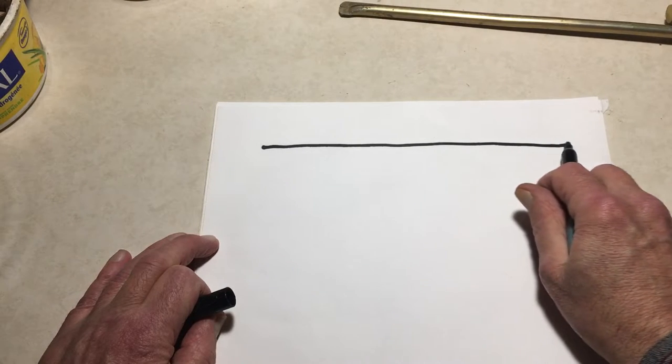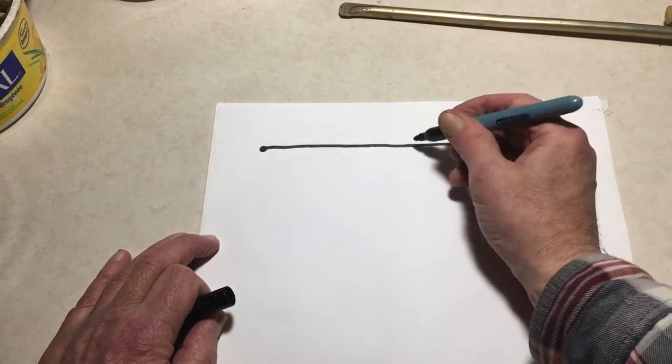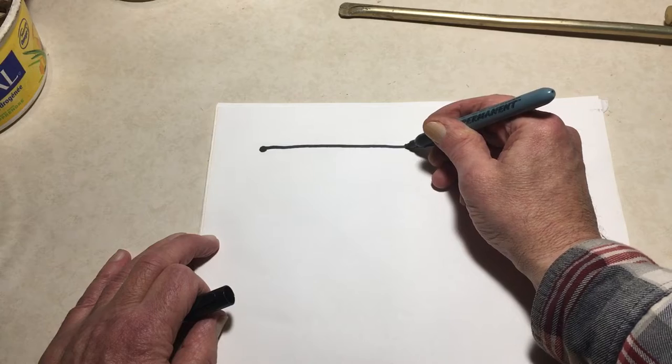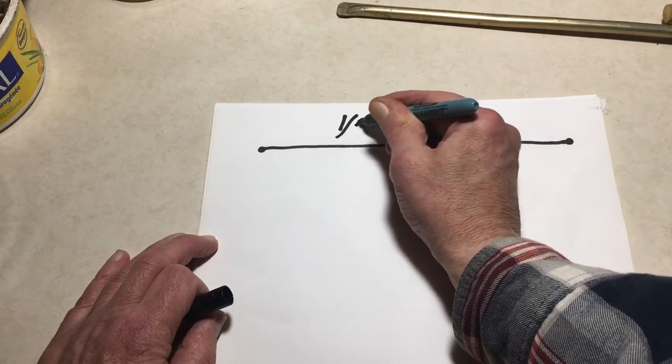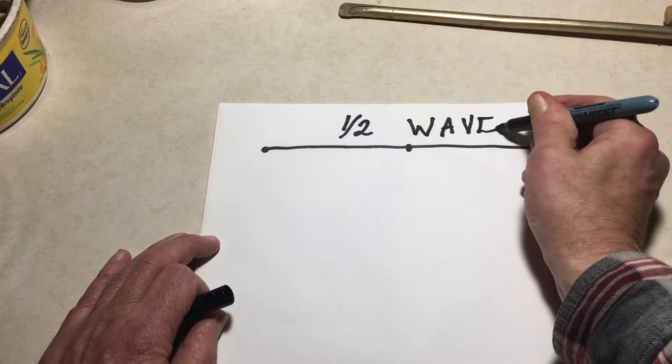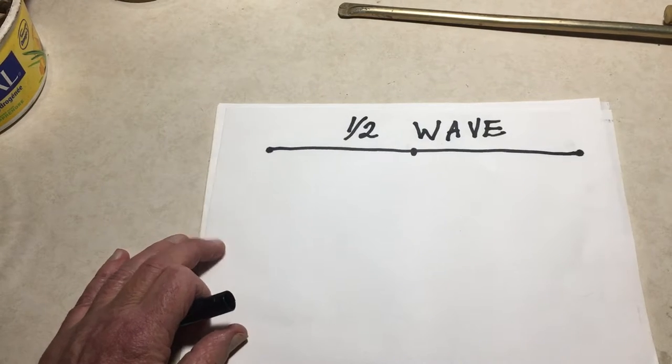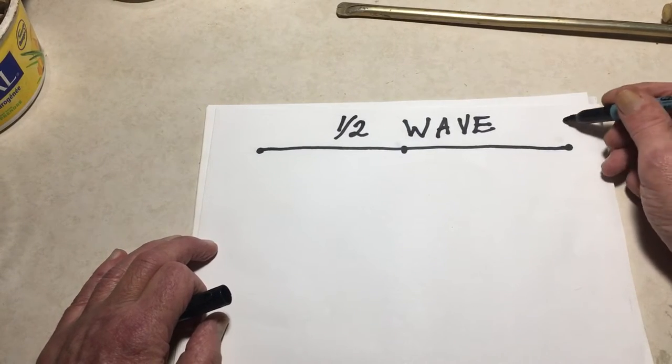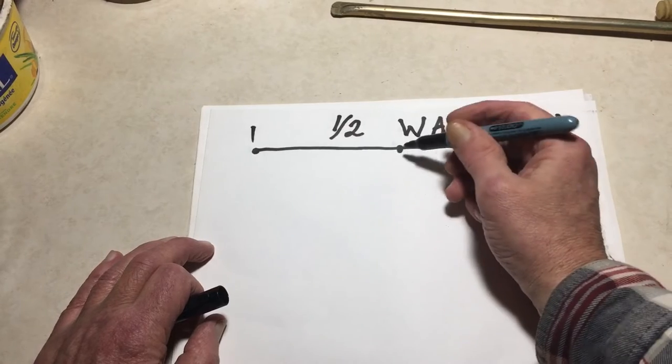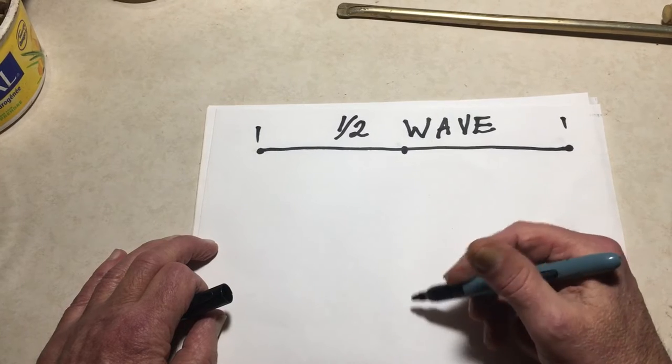Some of you may be looking through antenna books and see something like this. This is a representation now of a half wave antenna. Now if you're using this on the two meter band, that's easy numbers because a half wave on two meters just happens to be one meter. So we got one meter from here to here and we'll call this point here the center of the antenna.